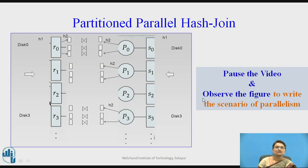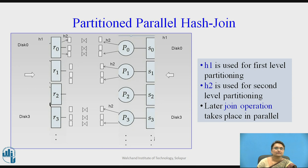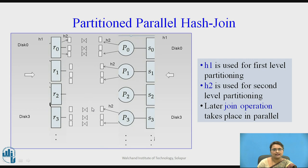You can pause the video and observe the figure to understand how parallelism works here. The same scenario is depicted in another way: h1 function is used as the first-level partitioning technique and h2 function is used for the second-level partitioning. After the second-level partitioning, the parallel join takes place — each partition joins with its corresponding partition, and all join operations are performed in parallel.